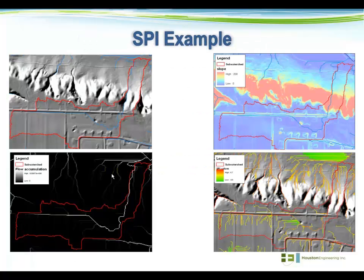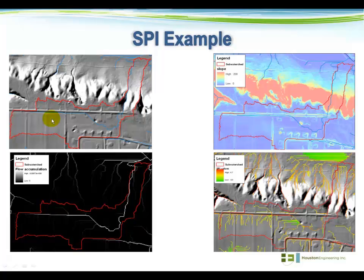I'll walk through a quick example where we computed SPI in one particular study. In the top left figure, I've got the hydrologically reconditioned DEM as the backdrop. This was a study done near the Minnesota River Valley — the Minnesota River runs along the top part of the figure. We've got a very flat floodplain in the top, a steep ravine coming down into that floodplain, and a very flat upland area. We delineated the catchment that feeds to the outlet of interest, and you can see in blue the flow path running through that catchment. The figure to the right shows the slope of the landscape, with low slopes in blue and high slopes in red.